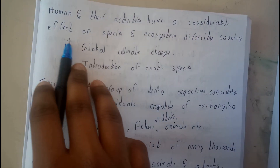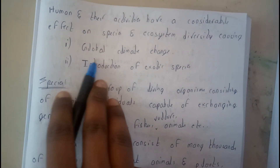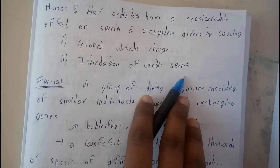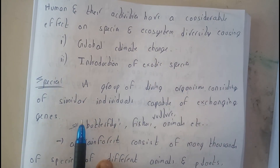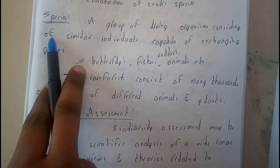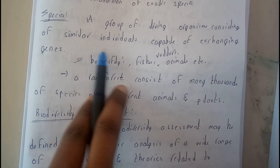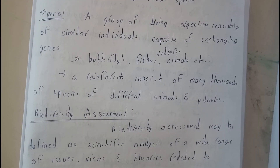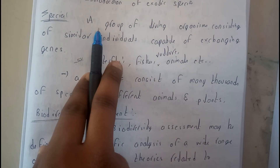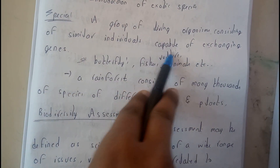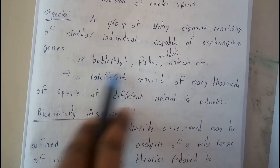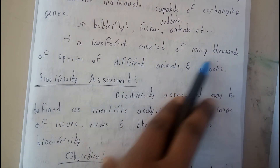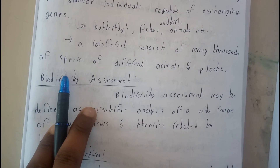Human activities have a considerable effect on species and ecosystem diversity, causing global warming as temperature increases, and the introduction of exotic species. Basically, a species is a group of living organisms consisting of similar individuals capable of exchanging genes — like butterflies, fish, vultures, and all animals. A rainforest consists of thousands of species of different animals and plants, as the forest is the place for both.